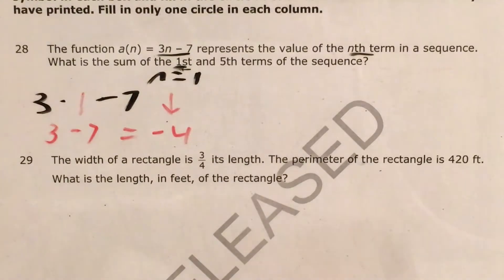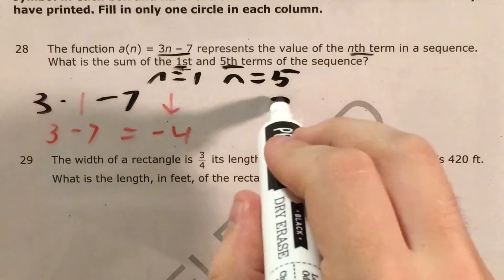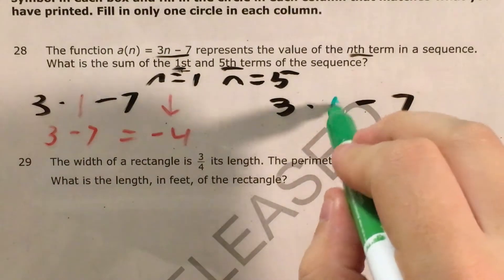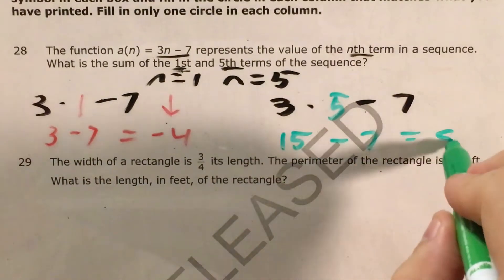and now to look for my fifth term, I do a very similar thing. I say, okay, my n equals 5. So that's 3 times 5 now minus 7. 3 times 5 is 15 minus 7 equals 8.